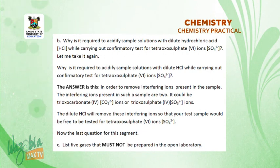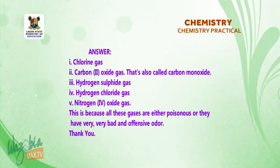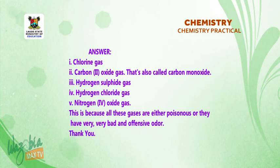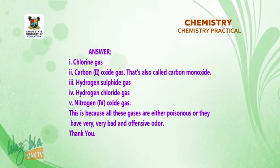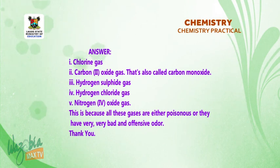The last question for this segment: list five gases that must not be prepared in the open laboratory. One, chlorine gas. Two, carbon(II) oxide gas — also called carbon monoxide. Three, hydrogen sulfide gas. Four, hydrogen chloride gas. And five, nitrogen(IV) oxide gas. This is because all these gases are either poisonous or they have very bad and offensive odor.